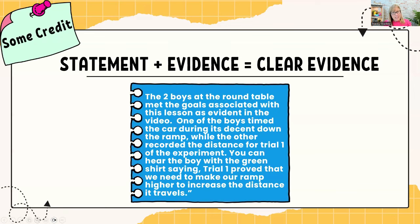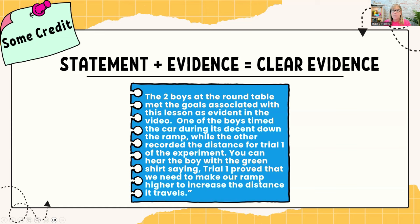The next slide — some credit — because what has happened here is the teacher has extended the statement by putting a little bit of evidence with it. This is kind of like clear evidence. This is where some of you fall in the 2, 2.25 trap. 'The two boys at the roundtable met the goals associated with this lesson as evident in the video. One of the boys timed the car during its descent down the ramp, while the other recorded the distance for trial one of the experiment. You can hear the boy with the green shirt saying, Trial one proved that we need to make our ramp higher to increase the distance it travels.' That is evidence pushed into the statement, so that's good. But there's still the need for analysis.